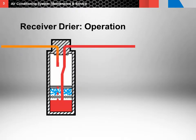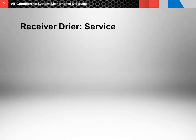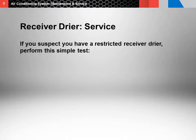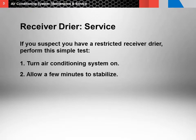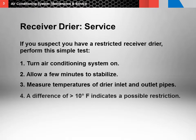Next is the receiver dryer. The receiver dryer is a filter — it filters debris that would plug the expansion valve. It's also a moisture remover, collecting moisture that would create acids in the sealed system and damage metal components. It's also a refrigerant storage tank. Always replace when installing a replacement compressor or when the system is open to the atmosphere for an extended period of time. If you suspect a restricted or partially restricted receiver dryer, turn the air conditioning system on and allow a few minutes for it to stabilize. Then, using an accurate contact thermometer, measure the temperatures of the dryer's inlet and outlet pipes as close to the dryer as possible. A difference of more than 10 degrees Fahrenheit between the readings indicates that the dryer may have an internal restriction and needs to be replaced.